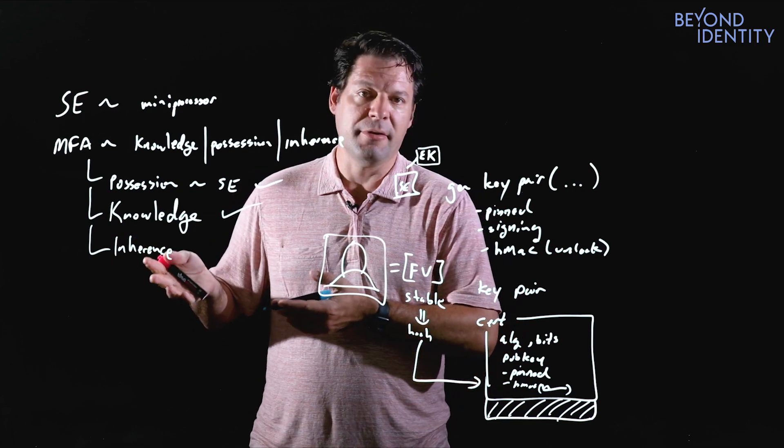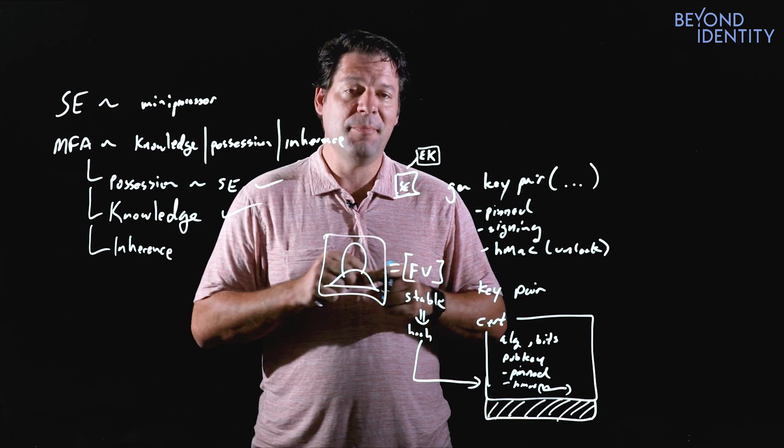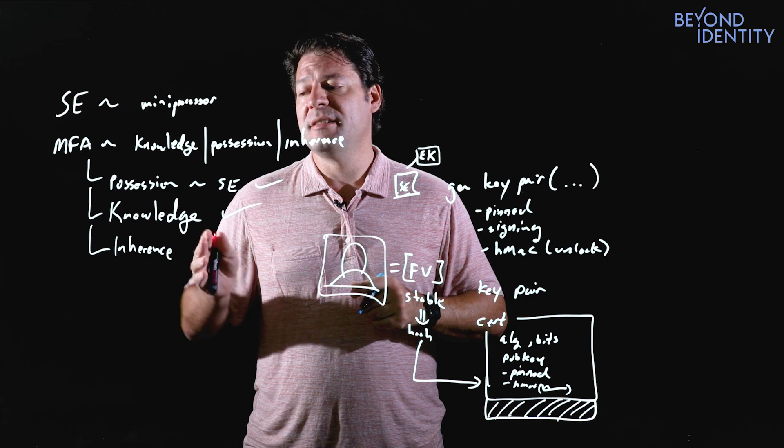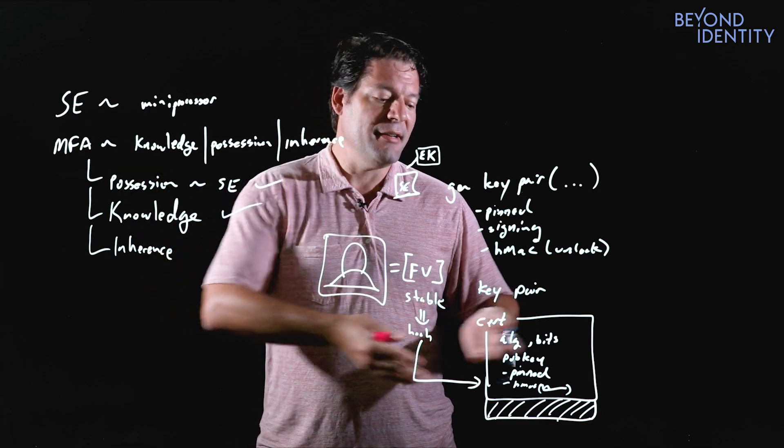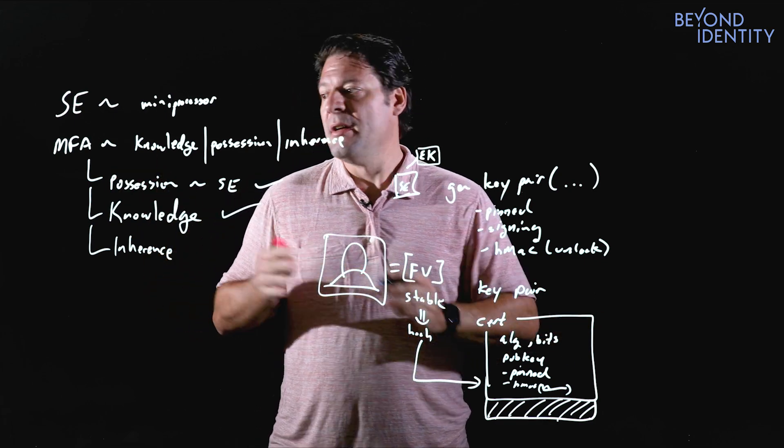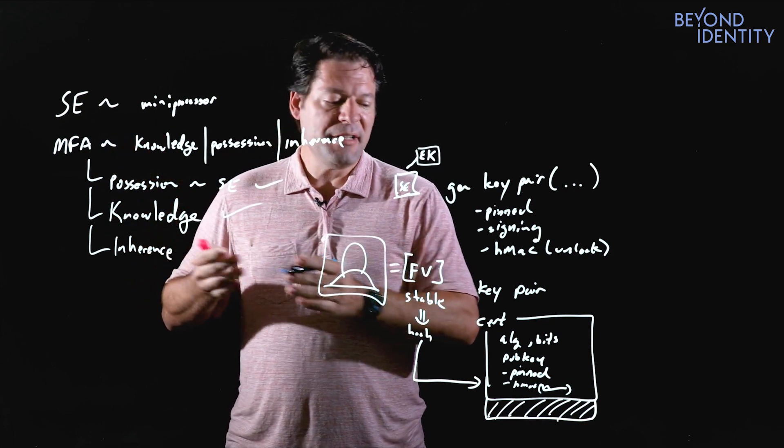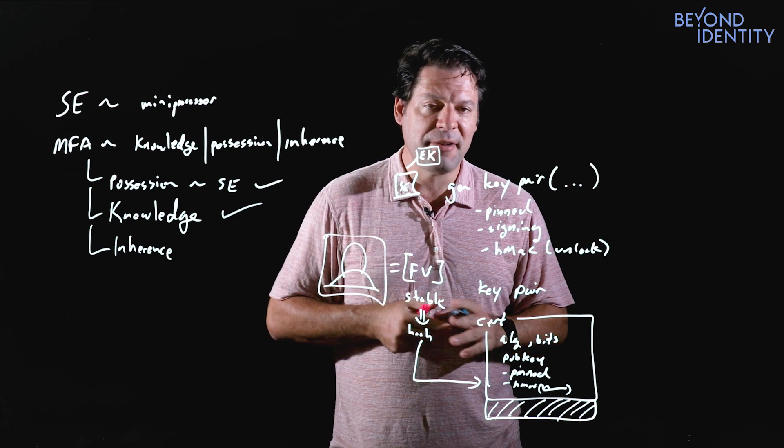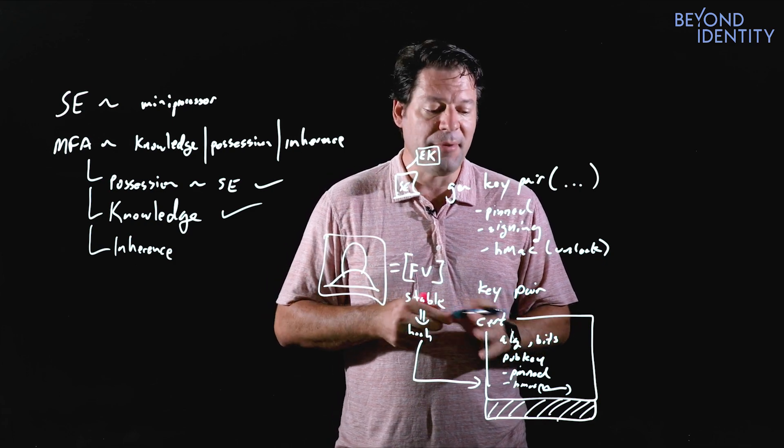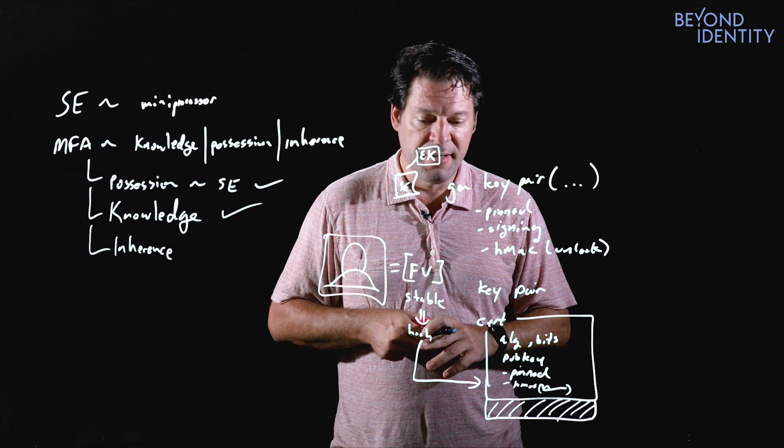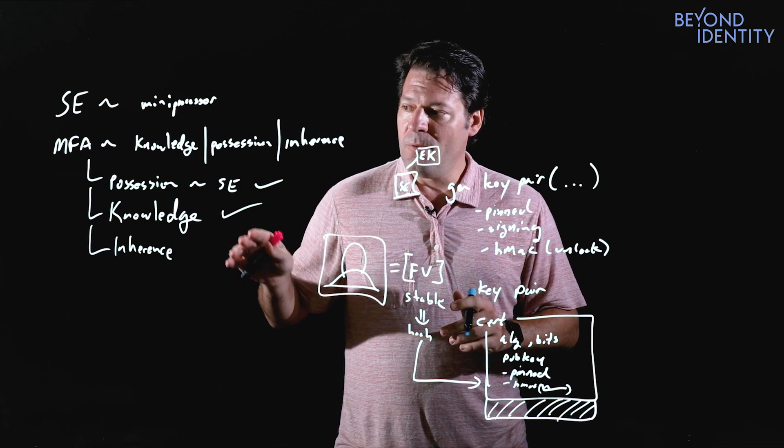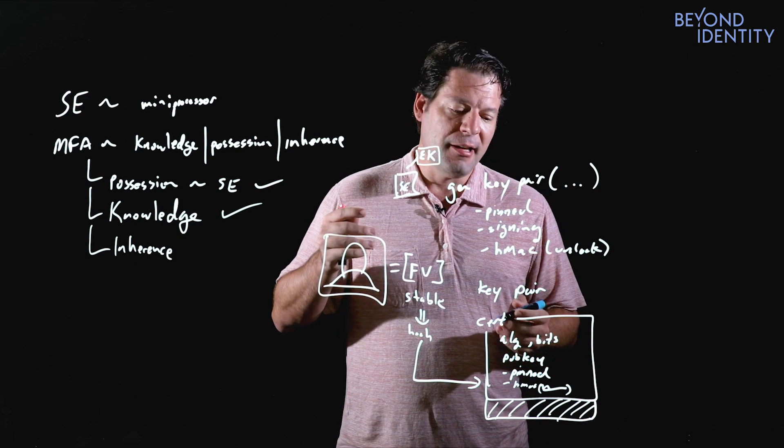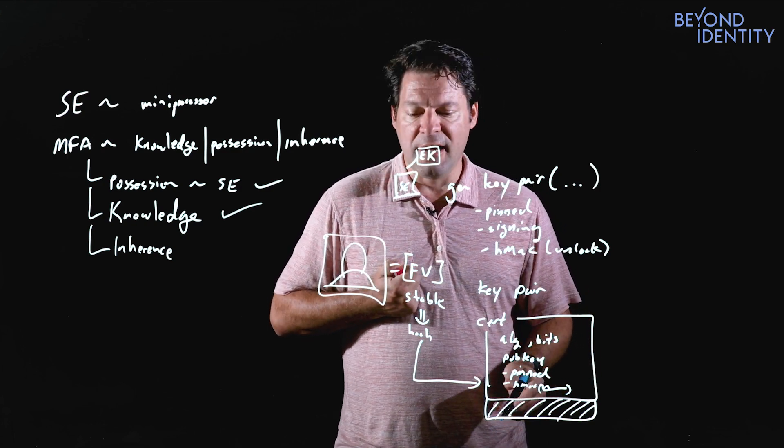So now I have a construction for essentially a biometric where the biometric never actually leaves the endpoint, but proof of inherence of the biometric does actually can follow. So secure enclaves give us a lot of interesting properties. I am taking a little bit of liberties to kind of try and have a simpler explanation. Honestly, I could probably talk for a couple hours on all the details and I'd love to, but that's going to be another series. And we can reconstruct each dimension of MFA with this enclave.